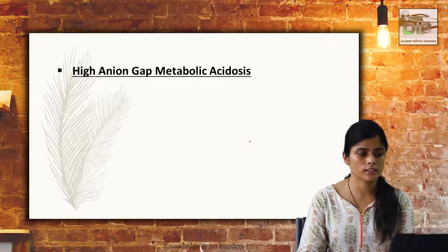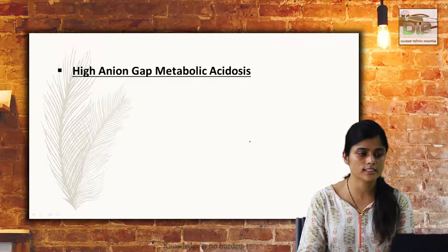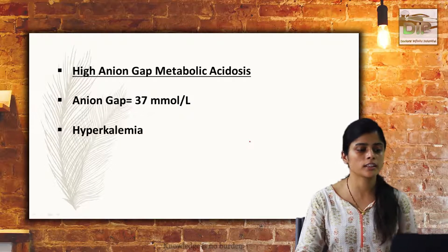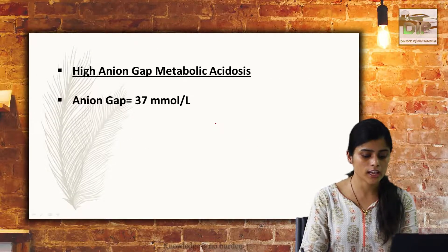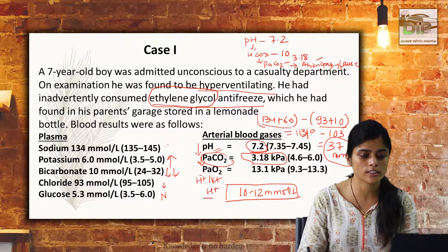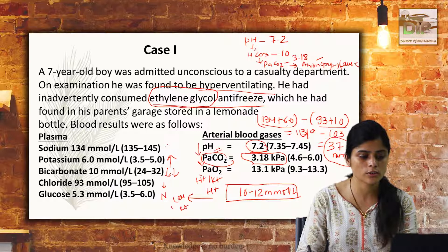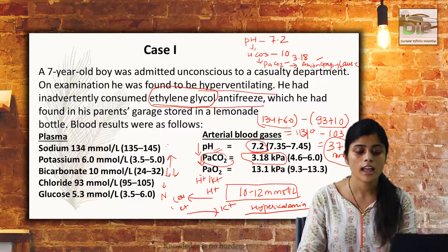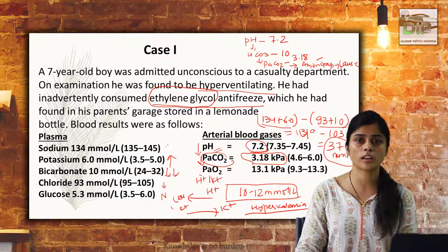The diagnosis for this case is high anion gap metabolic acidosis, with anion gap of 37 millimole per litre. There is hyperkalemia, and hyperkalemia is mainly because of the decrease in pH. The H+/K+ exchanger causes H+ ions in high amounts in the plasma to move inside the cell, and the potassium present intracellularly comes outside, leading to hyperkalemia. Remember: acidosis is always associated with hyperkalemia and alkalosis is always associated with hypokalemia.